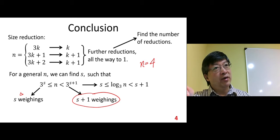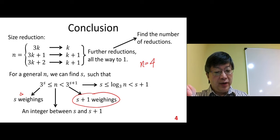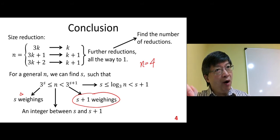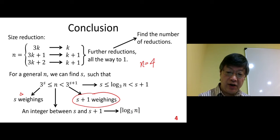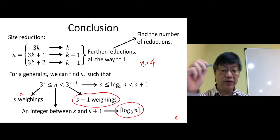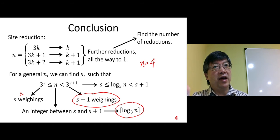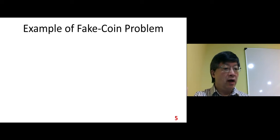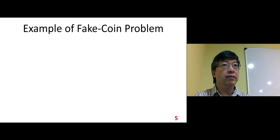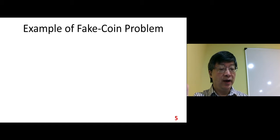Since we go to the upper side, we apply the ceiling function. The final answer is the ceiling of log base 3 of n. That is our general formula for the number of weighings needed to solve the fake coin problem.